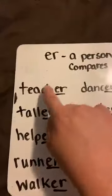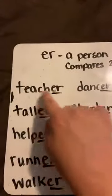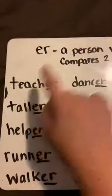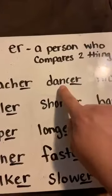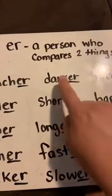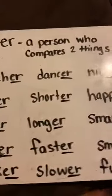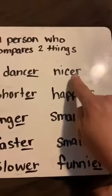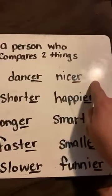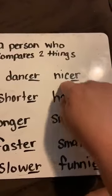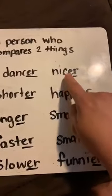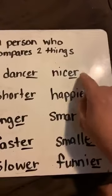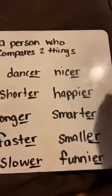Let's look at this first one. A teacher — a teacher is a person who what? Well, it's a person who teaches. A dancer is a person who dances. Very good. Now over here on this one: 'nicer.' This is when you're comparing two things. The turtle is nicer than the bird, so it's comparing two things. Very good.